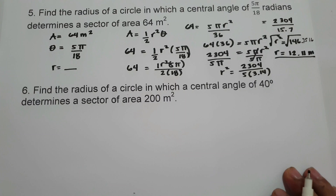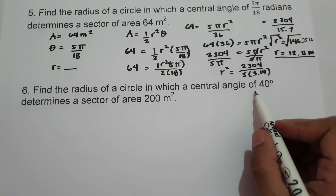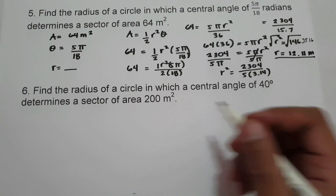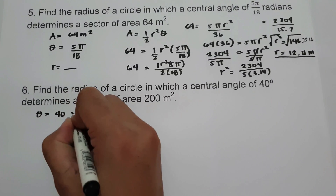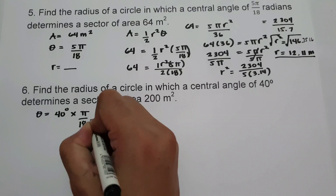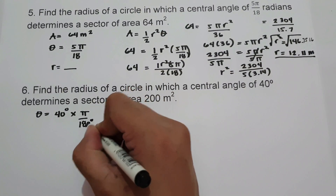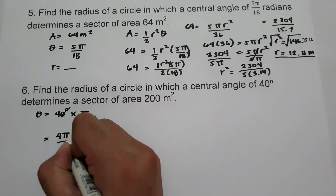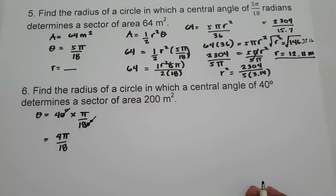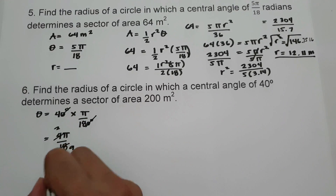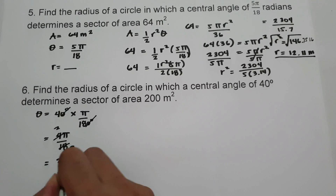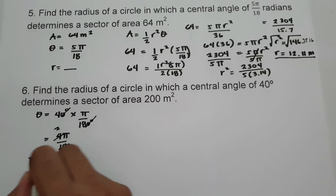For the next problem, the central angle is not already in radian, so we convert 40 degrees to radian. We have 40 times pi over 180 degrees. Canceling the degree symbol gives 4 pi over 18, which simplifies to 2 pi over 9. So 40 degrees in radian is 2 pi over 9. This is our central angle.